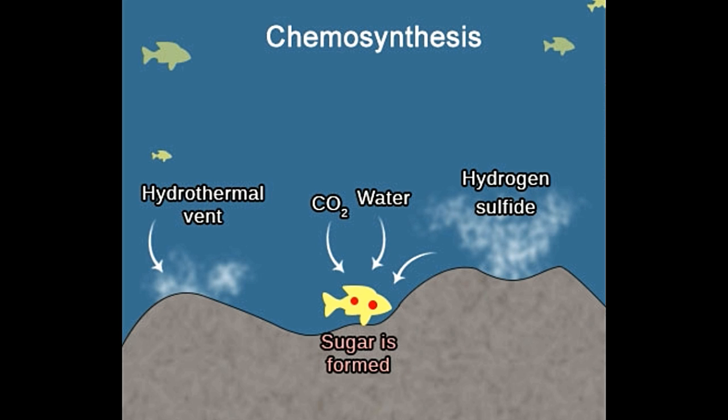As far as the similarities are concerned, although chemosynthesis and photosynthesis derive energy from different sources, both these processes produce glucose sugar, which serves as food for both plants as well as animals.